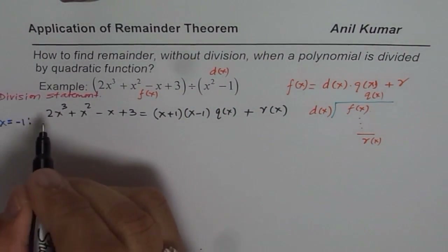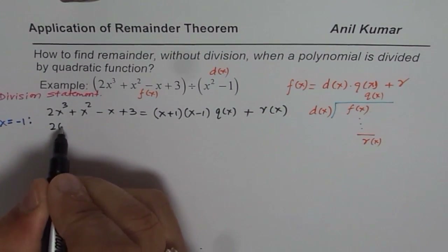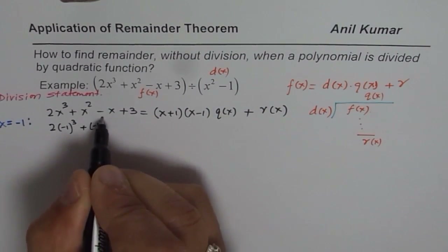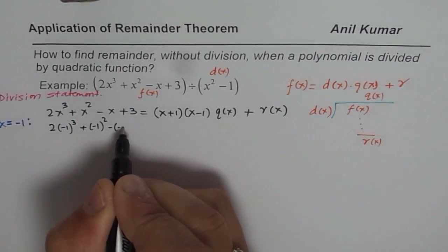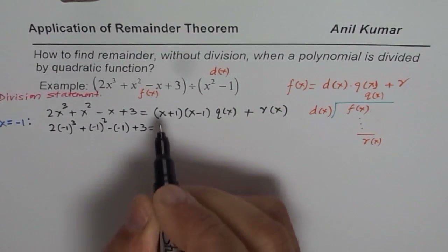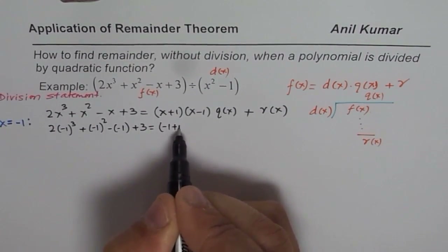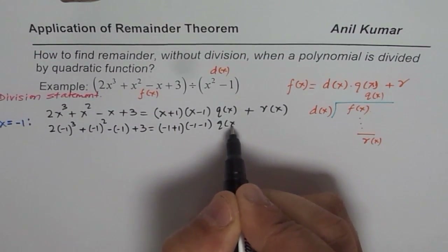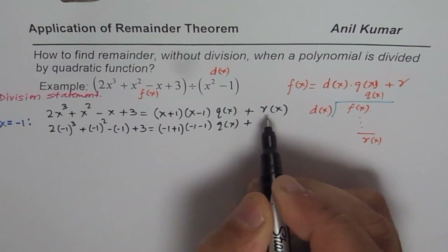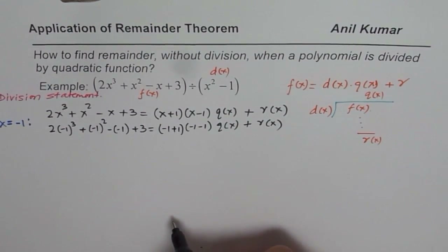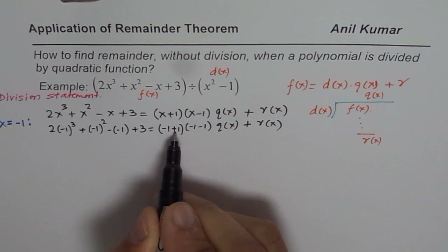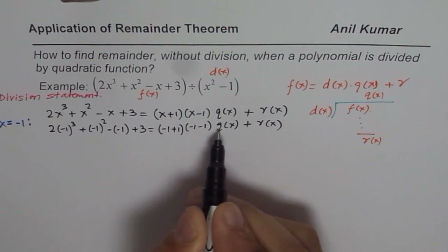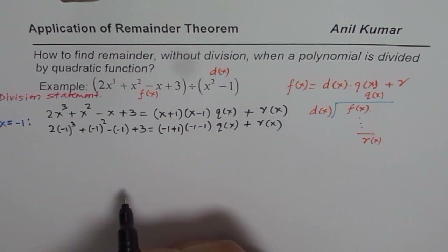Substituting x = -1: we get 2(-1)³ + (-1)² - (-1) + 3 equals (-1 + 1)(-1 - 1)·q(x) + r(x). Here, (-1 + 1) is 0, so 0 times q(x) is 0. We are left with just r(x) on the right-hand side.